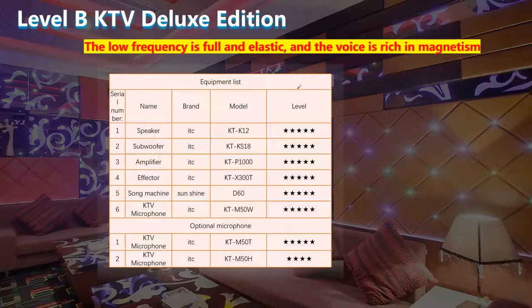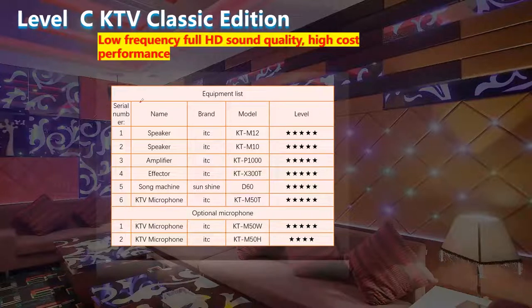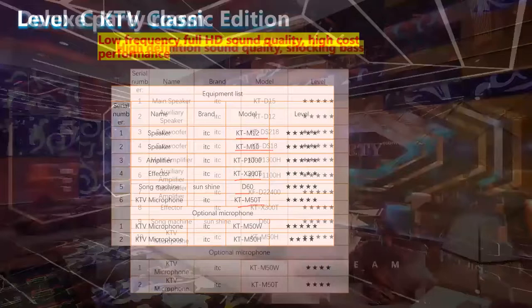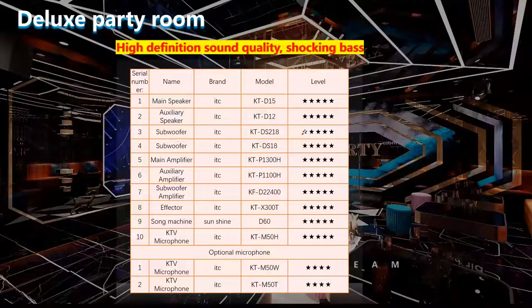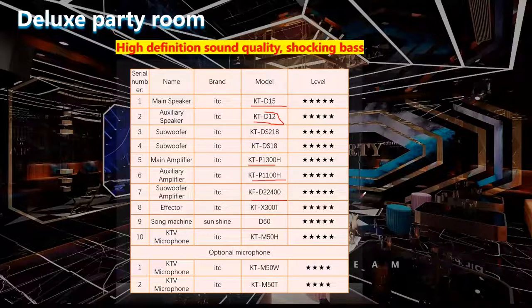For the Level B Deluxe edition, we apply one more subwoofer. For Level C Classic edition, we need two types of full frequency speakers, plus amplifier, sound machine, E-factor, and microphones. For party rooms, we need more speakers because of the larger area. For the main speaker, we apply the D12 and D15, and a luxury speaker with D12 subwoofer to supply low frequency sound, plus luxury amplifier and subwoofer amplifier. The devices in the KTV room are very simple, and the connection is also very simple.